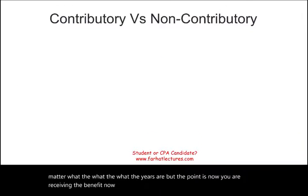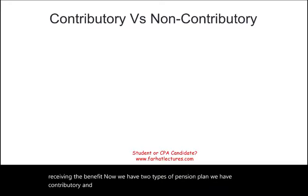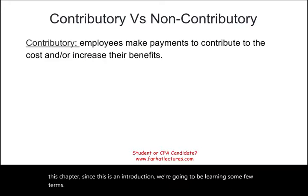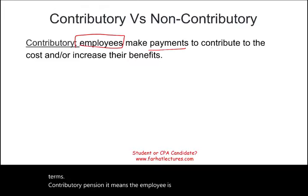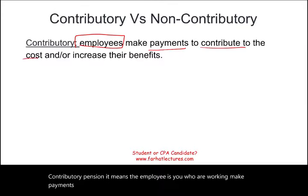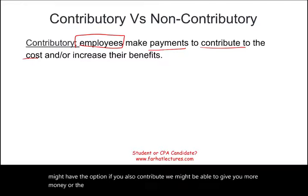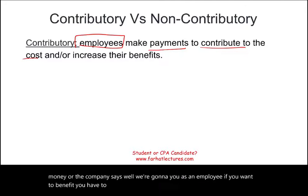Now we have two types of pension plan: contributory and non-contributory. In a contributory pension plan, the employees — you who are working — make payments to contribute to the cost or to increase your benefit. For example, if you also contribute, they might be able to give you more money. This is called a contributory pension plan.